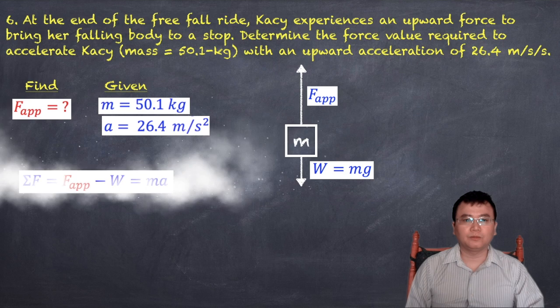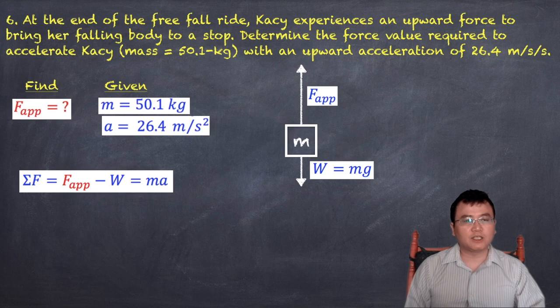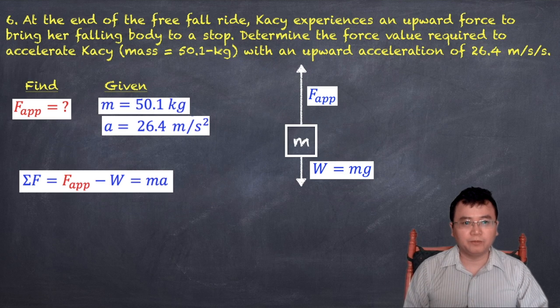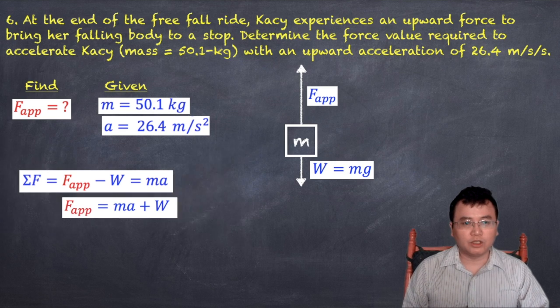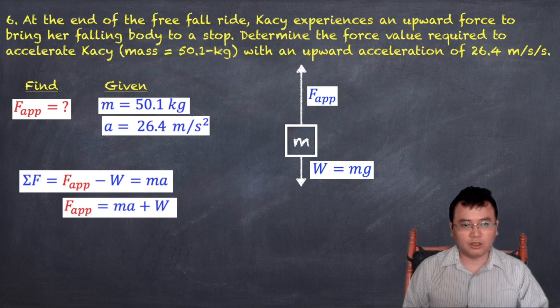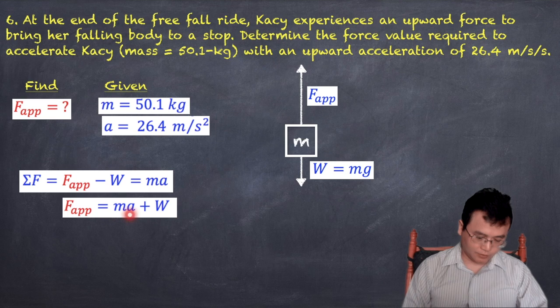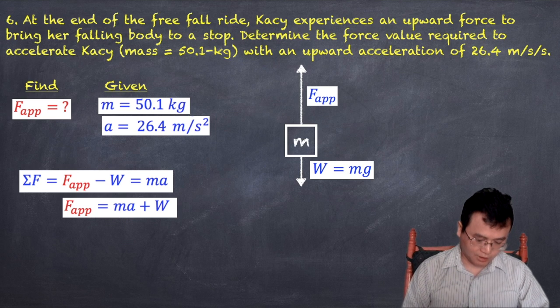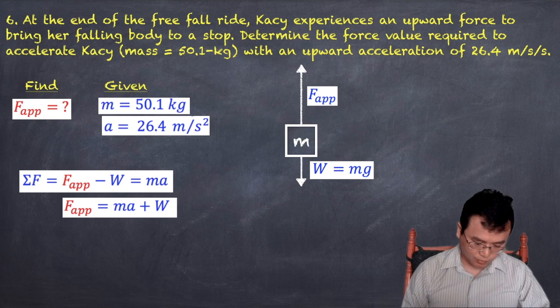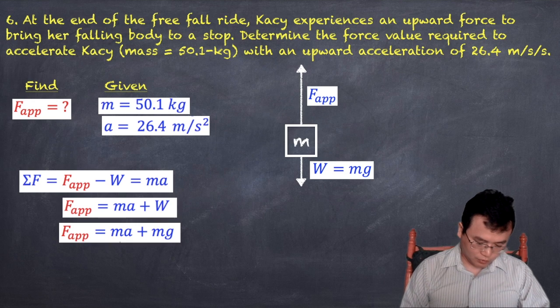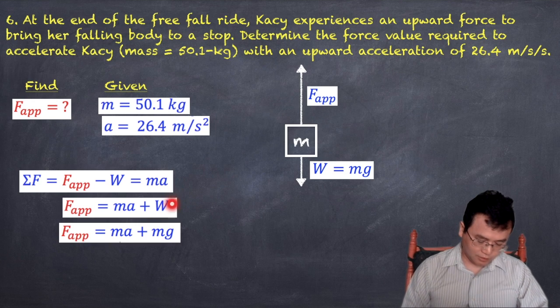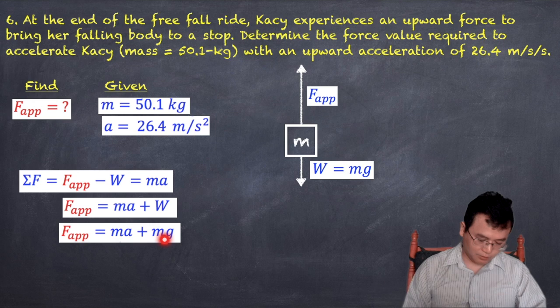And so we use Newton's second law again. F applied minus weight equals ma. Then we just move that to the right by adding, we get F applied equals ma plus W. And so weight, the definition of weight is mg, so I'm just putting mg here.